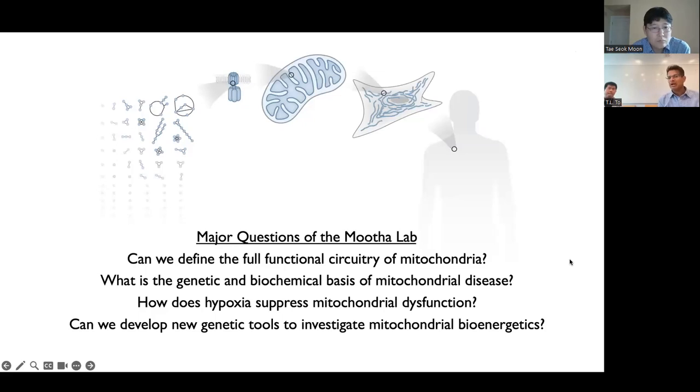And so those are sort of the two broad thrusts of our lab. And here's some of the major questions of the Muta lab today. And I'll just show one slide for each of these four main themes. Number one is, we want to systematically, the way that a systems biologist would define the full functional circuitry of the mitochondrion. We want to know what the molecular basis of mitochondrial diseases are. A couple of years ago, we made this really interesting observation that whether you're a yeast, or a C. elegans, or even a mouse, if you have a broken mitochondrial respiratory chain, simply by placing that organism in low oxygen continuously, we can have a dramatic improvement on the well-being of that organism. And so we're trying to understand that better. And finally, we're trying to develop new tools the way that synthetic biologists would try to investigate mitochondrial biology.